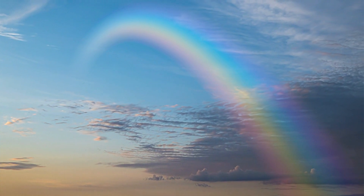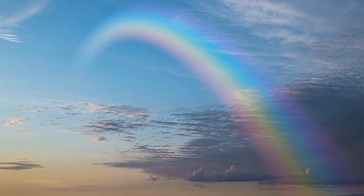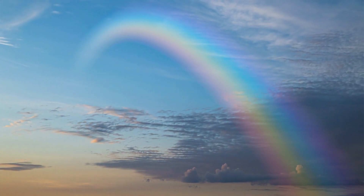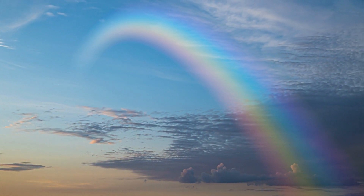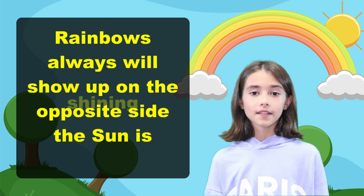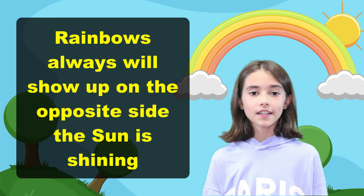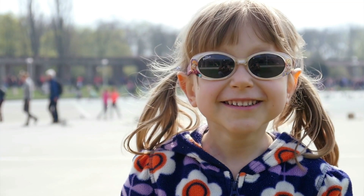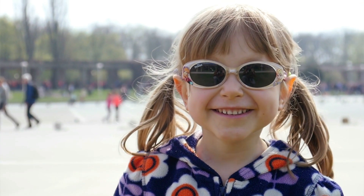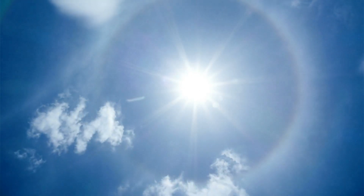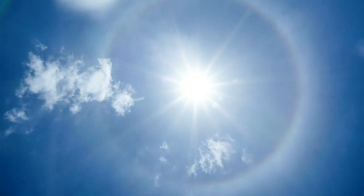Rainbows can be seen in mist, fog, during or after it rains, and even in dew. Rainbows always show up on the opposite side from where the Sun is shining. If you have ever worn sunglasses and saw the sunlight, you might think that the light looks white, right?